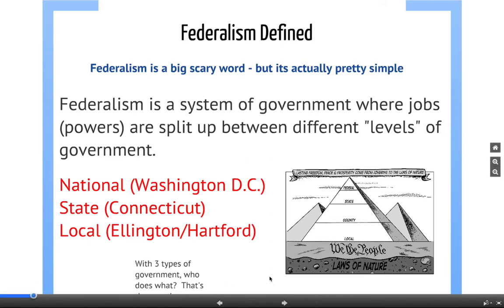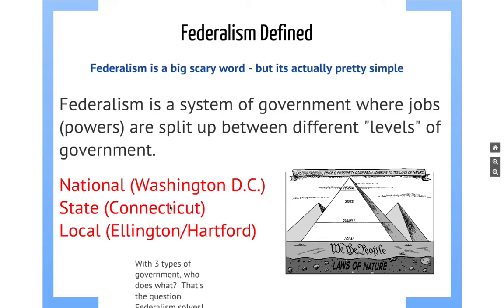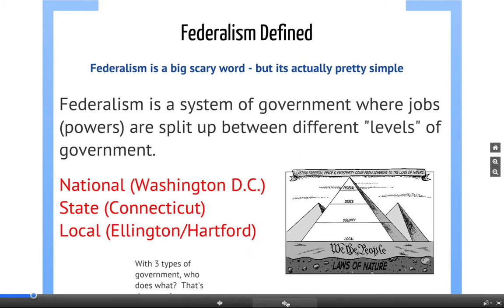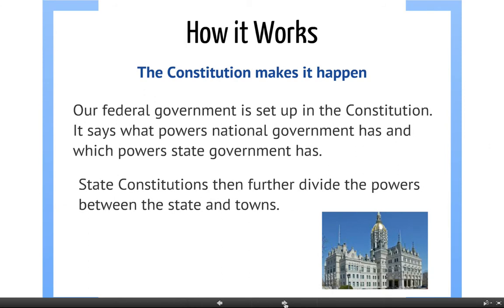Our three levels of government are national, state, and local. Our national government is in Washington D.C., we have a Connecticut state government, and we also have a local government that runs the town of Ellington. All three of these governments have certain jobs, and what jobs they have are set up by our federal system. With three types of government, you might ask who does what — and that's an excellent question that federalism solves.